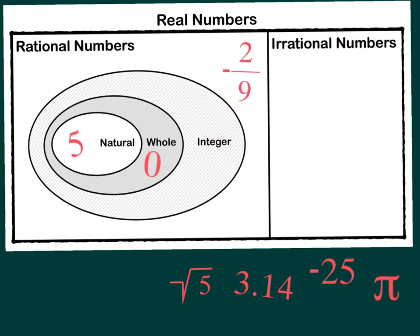This negative 2 ninths is actually a rational number. You can see that it represents a ratio. Now by placing negative 2 ninths in this portion, we're saying it is rational and real only. Those are its classifications.